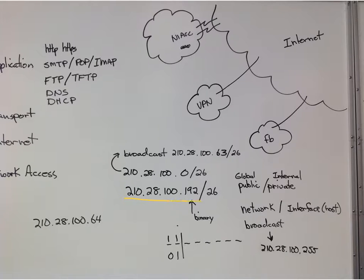I wrote this address on the board, 210.28.100.64, and asked is it global or public, or is it internal or private? This is a public address. Then I asked is it a network or an address for an interface? It's a network address. We drew it out here, converted that to binary, and got the network address.